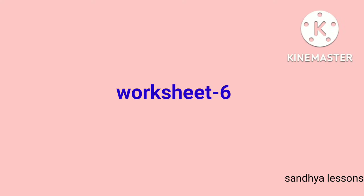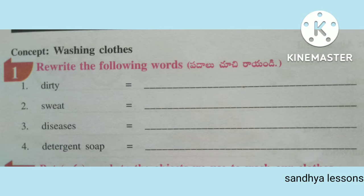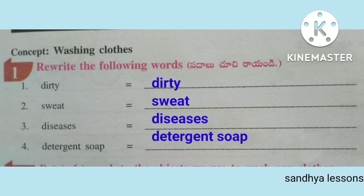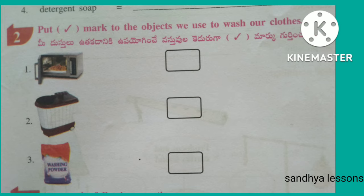Worksheet 6. First, rewrite the following words: Dirty, Sweat, Diseases, Detergent Soap. Second, put a tick mark next to the objects we use to wash our clothes: Washing Machine, Washing Powder.